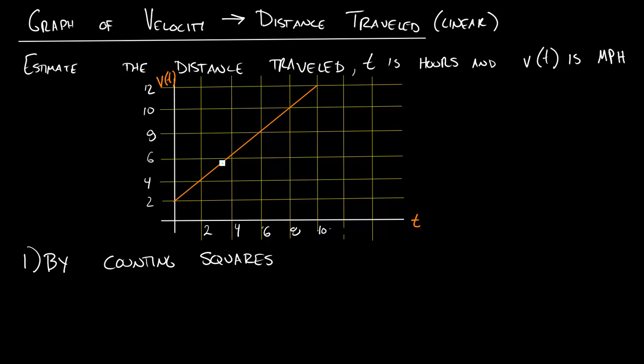One method is just by counting squares. We'll see what these squares mean in a second, but let's just count how many squares are underneath this curve. If I go through full squares, I can count 1, 2, 3, 4, 5, 6, 7, 8, 9, 10, 11, 12, 13, 14, 15 full squares.